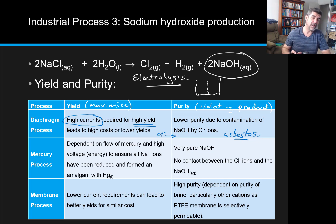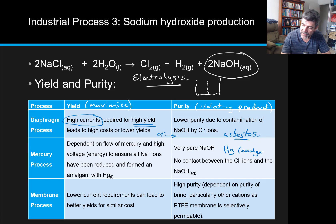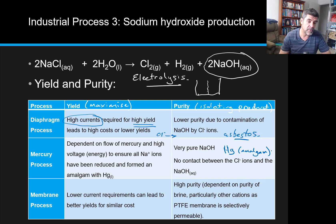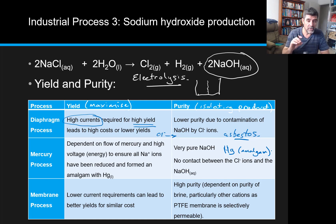Mercury is a much better option if we're looking at purity. In the mercury process, mercury is actually one of our electrodes and it forms an amalgam. Sodium is so reactive with water that it won't just sit in the water, so we have to remove it. Forming an amalgam with mercury — which is basically just an alloy of these two metals together — meant we could pull that sodium out of the solution.